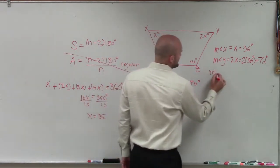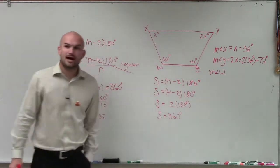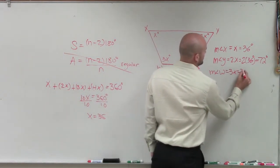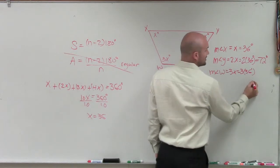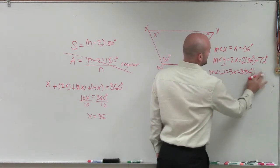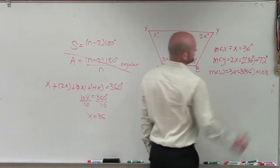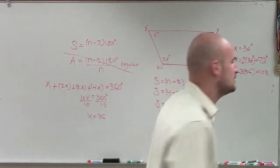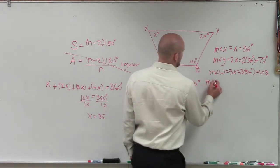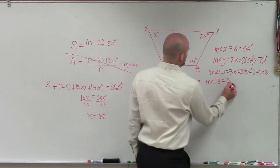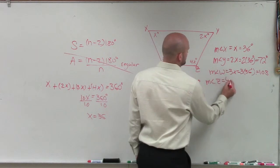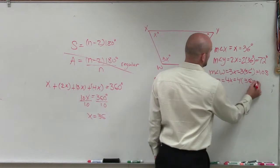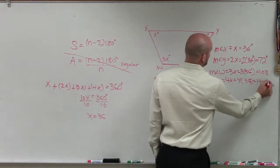Then I have measure of angle w, which is now 3x, right? So that's 3 times 36 degrees, which is equal to 108. You guys kind of seeing this, what I'm doing? I'm just plugging them in for each angle. And then we do the last one, measure of angle z, which is 4x. So that equals 4 times 32, 36, I'm sorry, which is 144 degrees.